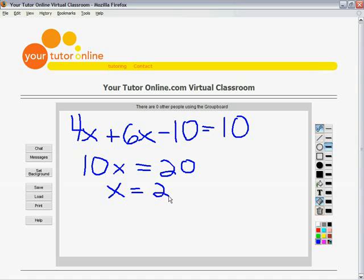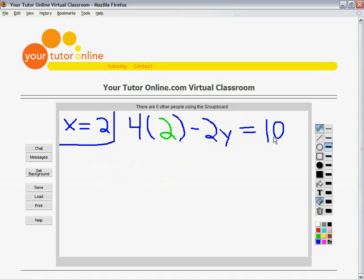Now that we know what x is, we can go back to one of the original equations, plug in 2 where we see an x, and solve for y. Here I plugged in 2 into the first equation. And we will solve for y. 4 times 2 is 8.